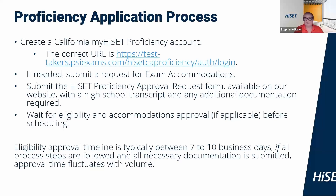The eligibility approval timeline is typically between 7 to 10 business days, if all process steps are followed and all necessary documentation is submitted. Approval timeline fluctuates with volume.